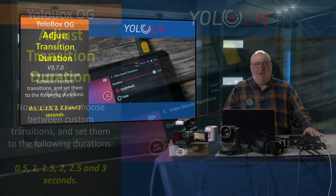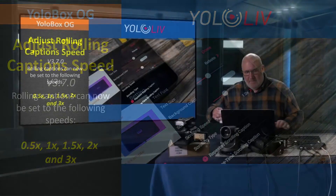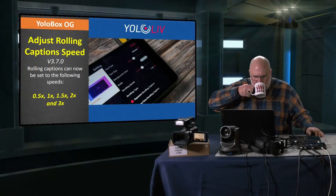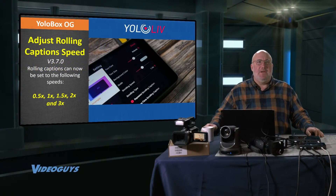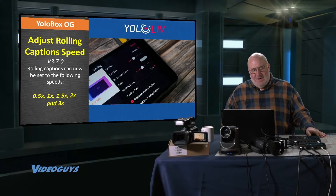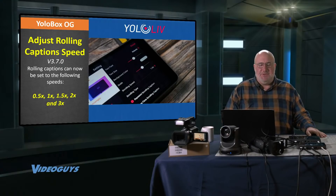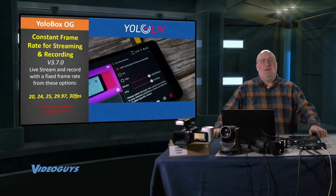Adjusting transition durations — a common-sense feature, and I think it's great that they did it. We don't always want every dissolve and every transition at the same speed. Same thing for rolling captions: it's nice to bring titles on screen with variable speed. Now we have 0.5x, 1x, 1.5x, 2x, and 3x speed options for moving captions on and off screen.